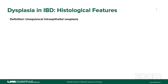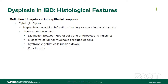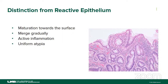Now about histologic features — dysplasia is defined as unequivocal intraepithelial neoplasia. We have to be certain what we are looking at is neoplastic. Most criteria are cytologic: hyperchromatia, high nuclear-to-cytoplasmic ratio, crowding of nuclei, overlapping, and anisonucleosis. Aberrant differentiation also helps us in diagnosing dysplasia, especially when we don't see the normal distinction between goblet cells and enterocytes, when there are excessive columnar mucinous cells, dystrophic goblet cells, or too many Paneth cells. Dysplasia can also have variable architecture.